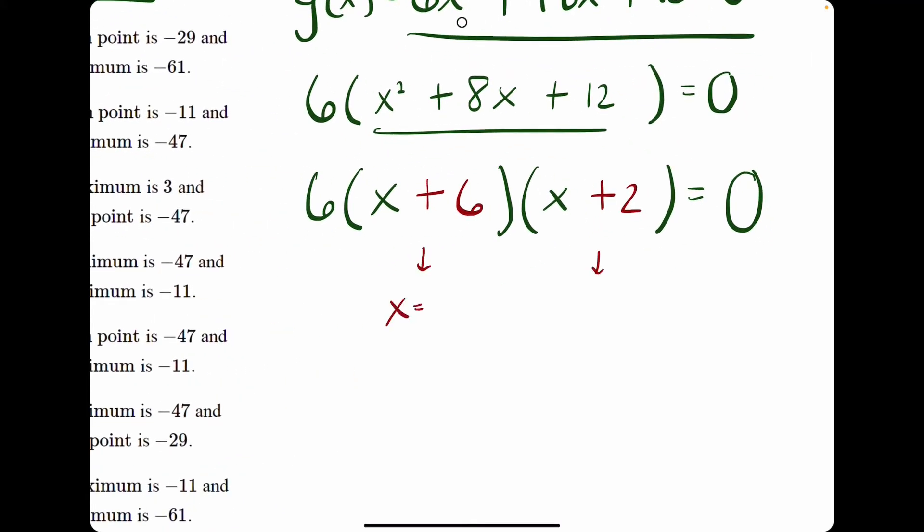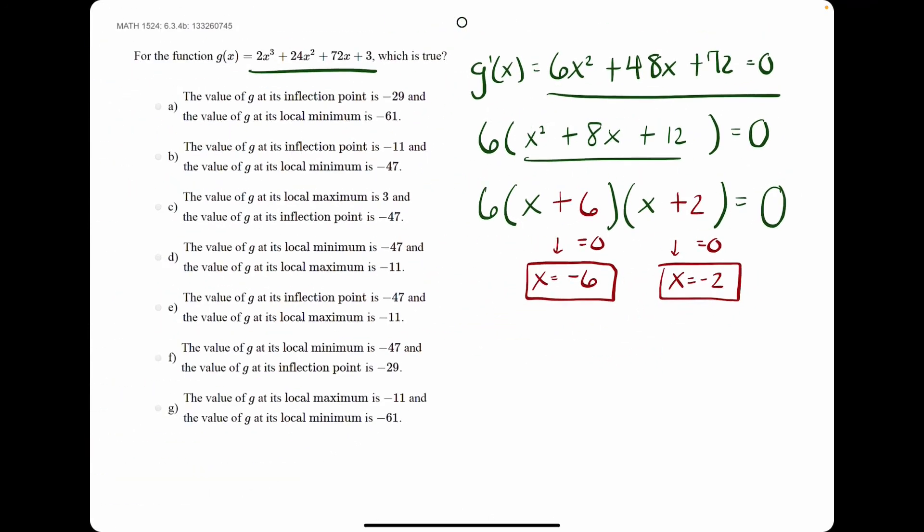Each of these factors will give us the opposite of what we see. But the idea is we set each of these factors equal to 0 and solve for x. x plus 6 equals 0 gives us an x value of negative 6. x plus 2 equals 0 gives us negative 2 for x.